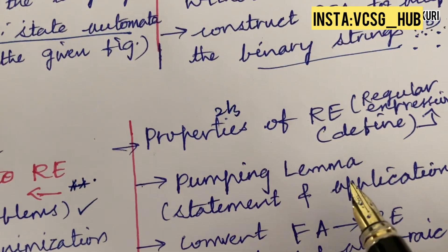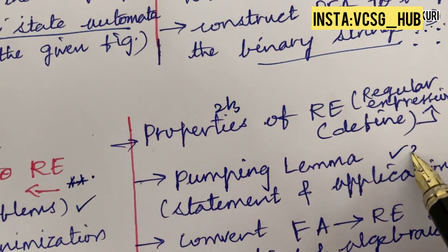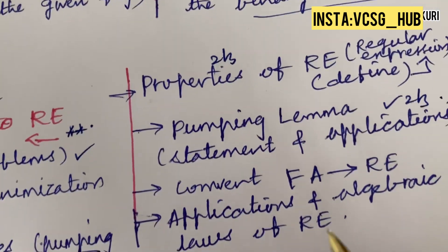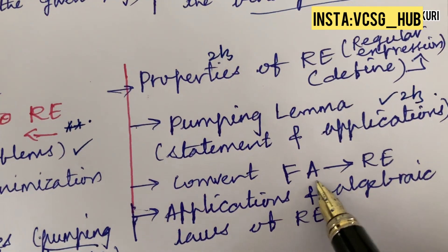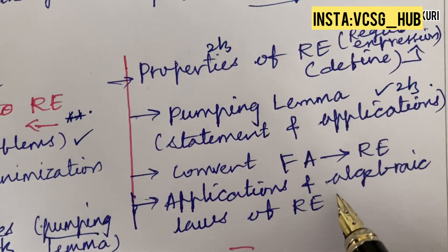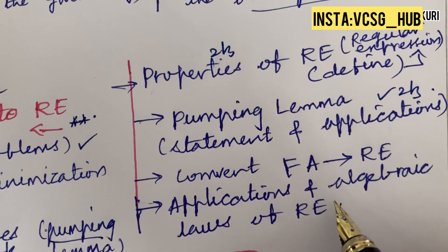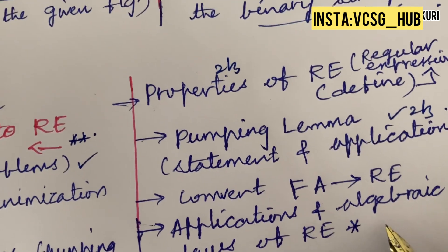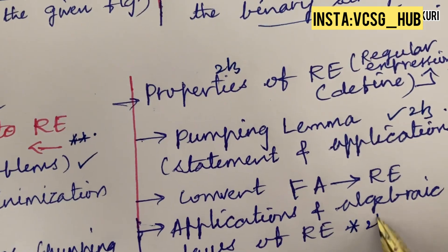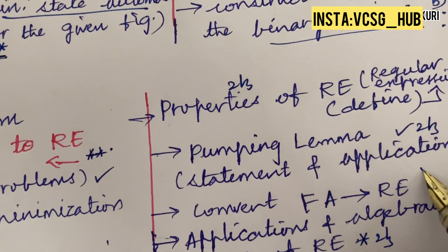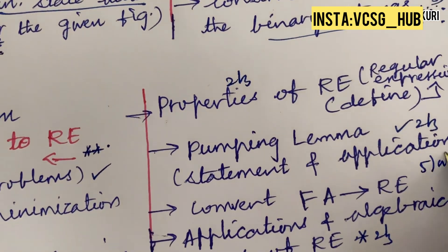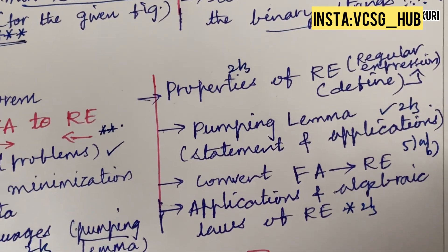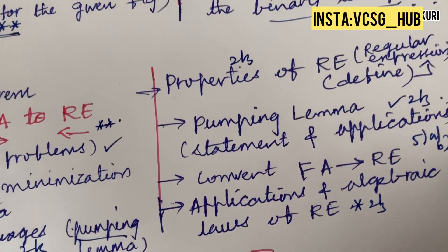The pumping lemma — its statement and applications — may be a 2 or 3 mark question. Convert FA to RE or vice versa, and its applications, along with the algebraic laws of regular expressions, may also be 2 or 3 mark questions. From this part, you can expect Q5A and Q5B, or just the fifth question.